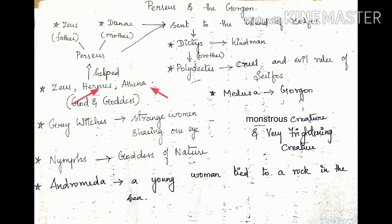Next we have characters like Hermes and Athena, who were god and goddess. Then we have the grey witches, who were three in number — strange women who share one eye among them. Then we have nymphs, who were the goddess of nature and took care of the goddess Hera's garden. Then Andromeda, a young woman tied to a rock in the sea. And the very interesting character Medusa, who had two sisters who were Gorgons — monstrous, frightening creatures with snakes grown on their heads.